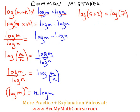Second common mistake. Log of m times n equals log m times log n. Totally wrong. In fact, this can actually be simplified into or changed into log m plus log n.